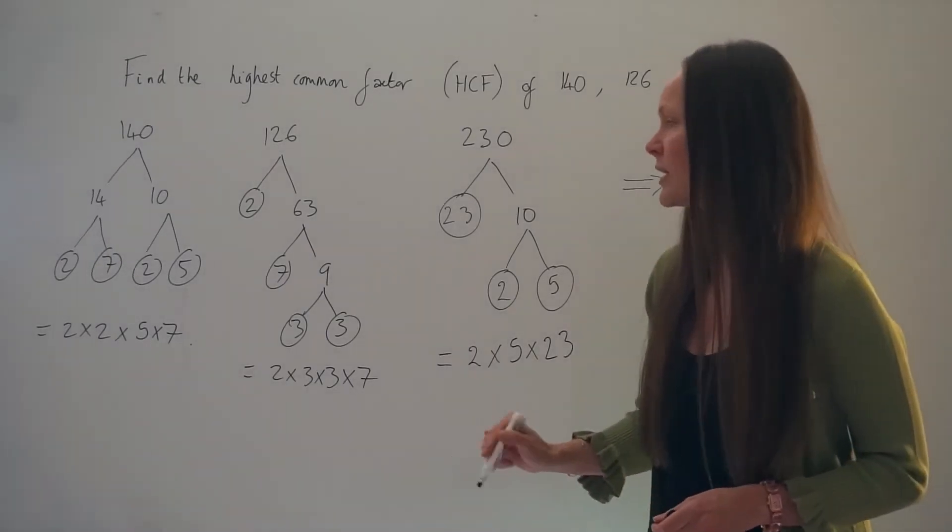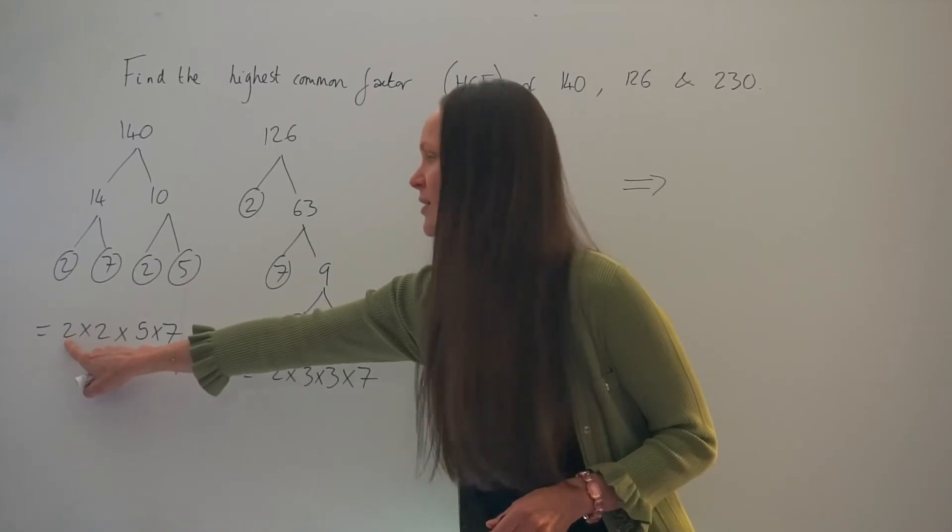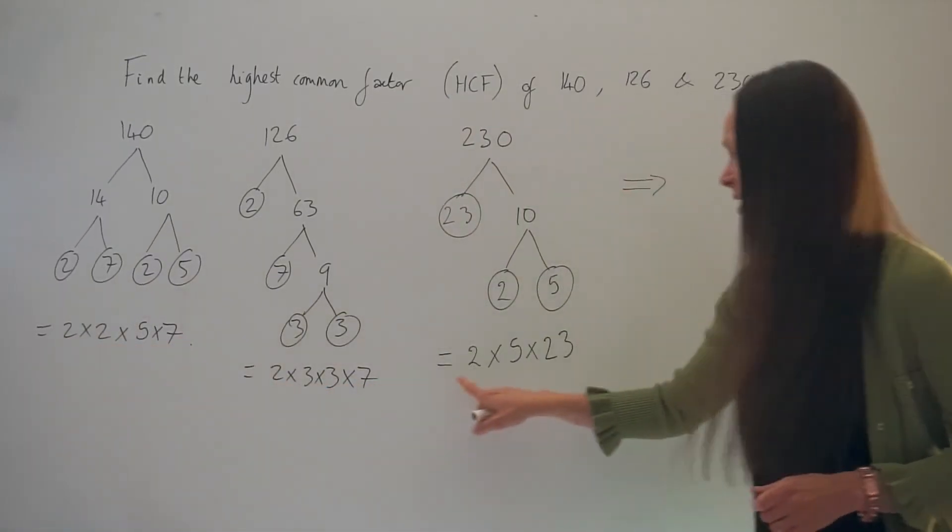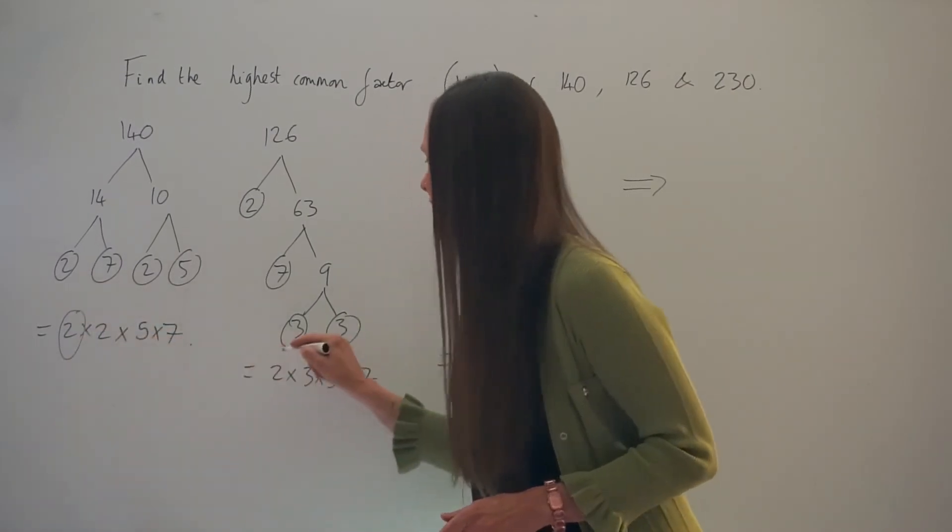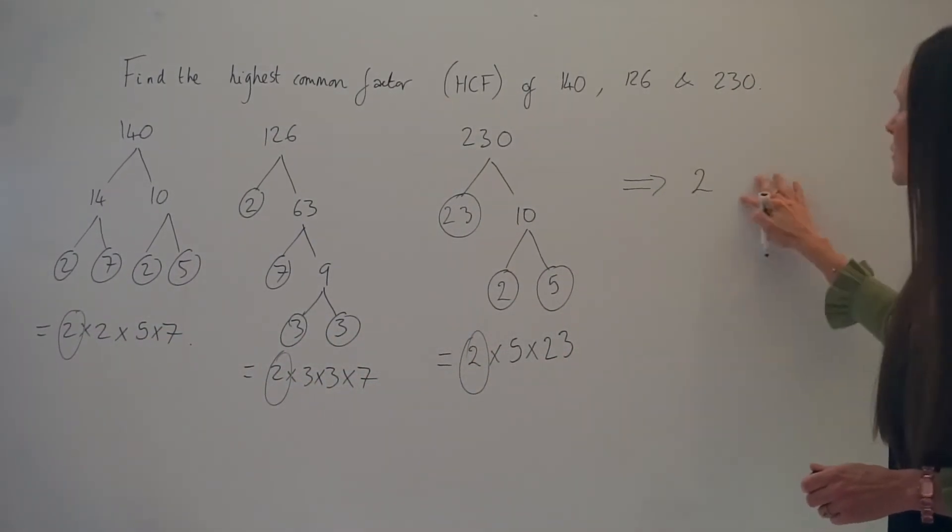Let's start by looking at the number 2 here. I can see the number 2 occurs here, here, and also here. So this is a common prime factor, and I'm going to write it down over at the top here.